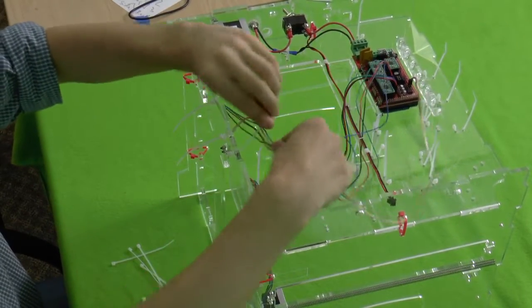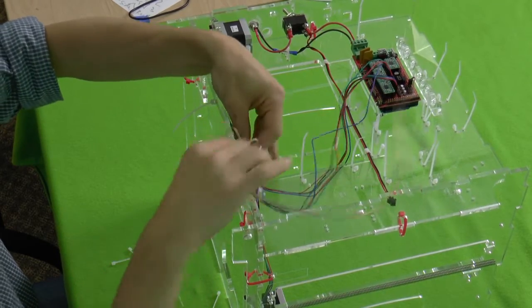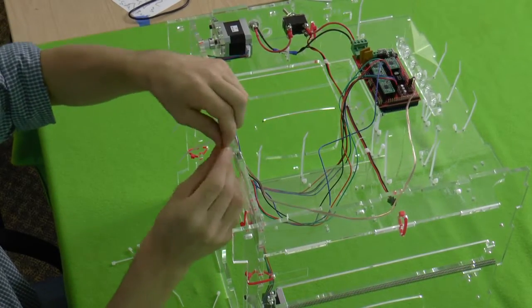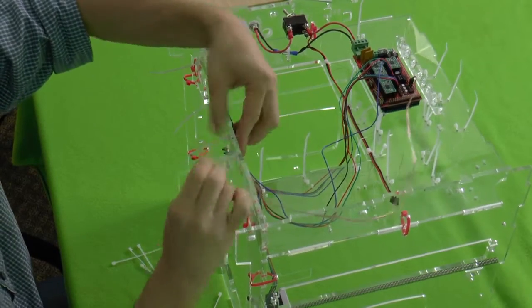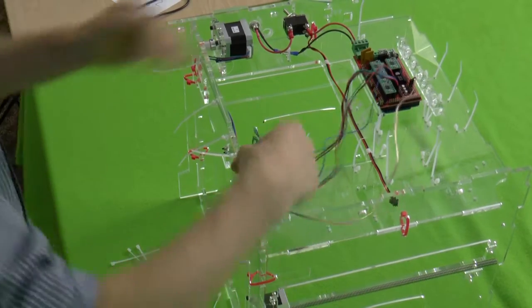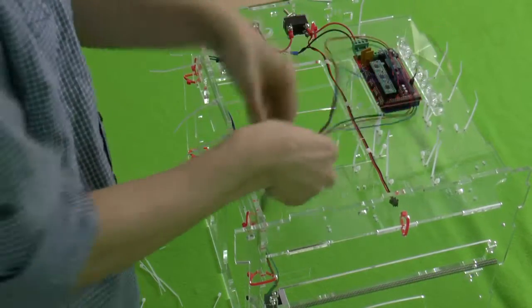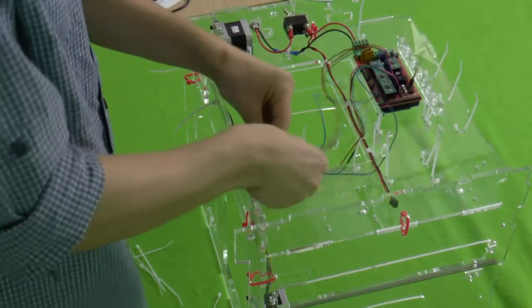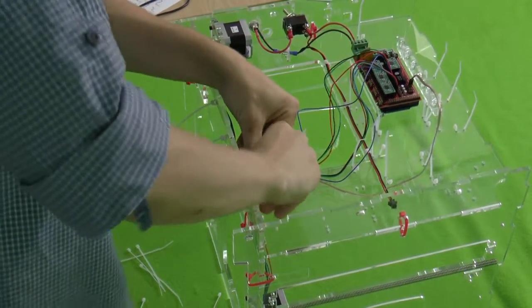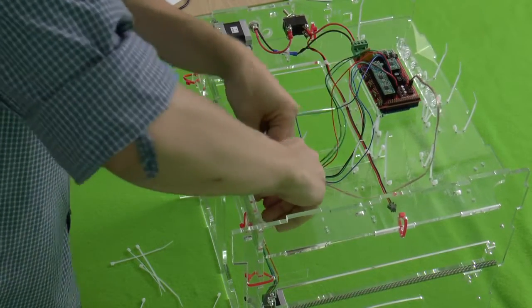Now underneath this zip tie, we'll combine the Y end stop and the Y motor wire. They're going to join together. Beautiful. And now coming up, all three wires—the Y motor, Z motor, and the Y end stop—are going to come together.